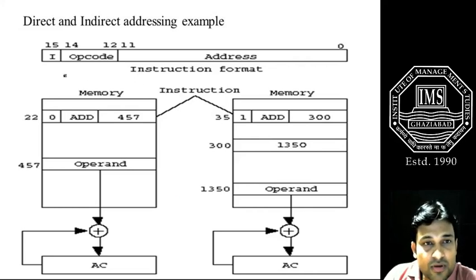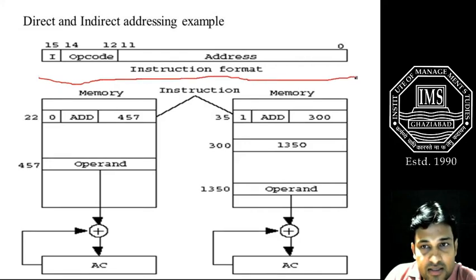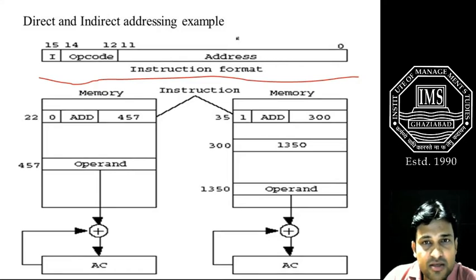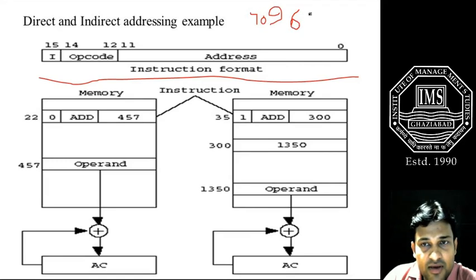We can view this instruction format for both direct and indirect addressing. Suppose we have two inputs: 4096 memory words of memory capacity, and an instruction format of 16 bits.